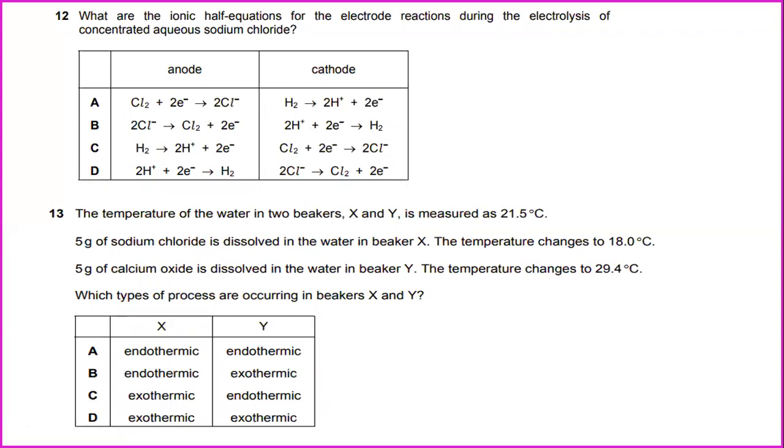Number 12. What are the ionic half equations for the electrode reactions during the electrolysis of concentrated aqueous sodium chloride? The answer for this will be B. The temperature of water in two beakers X and Y is measured as 25.1°C. 5 grams of sodium chloride is dissolved in the water in beaker X. The temperature changes to 18.0°C. 5 grams of calcium oxide is dissolved in the water in beaker Y. The temperature changes to 29.4°C. Which types of process are occurring in beakers X and Y? X represents endothermic process and Y is exothermic.